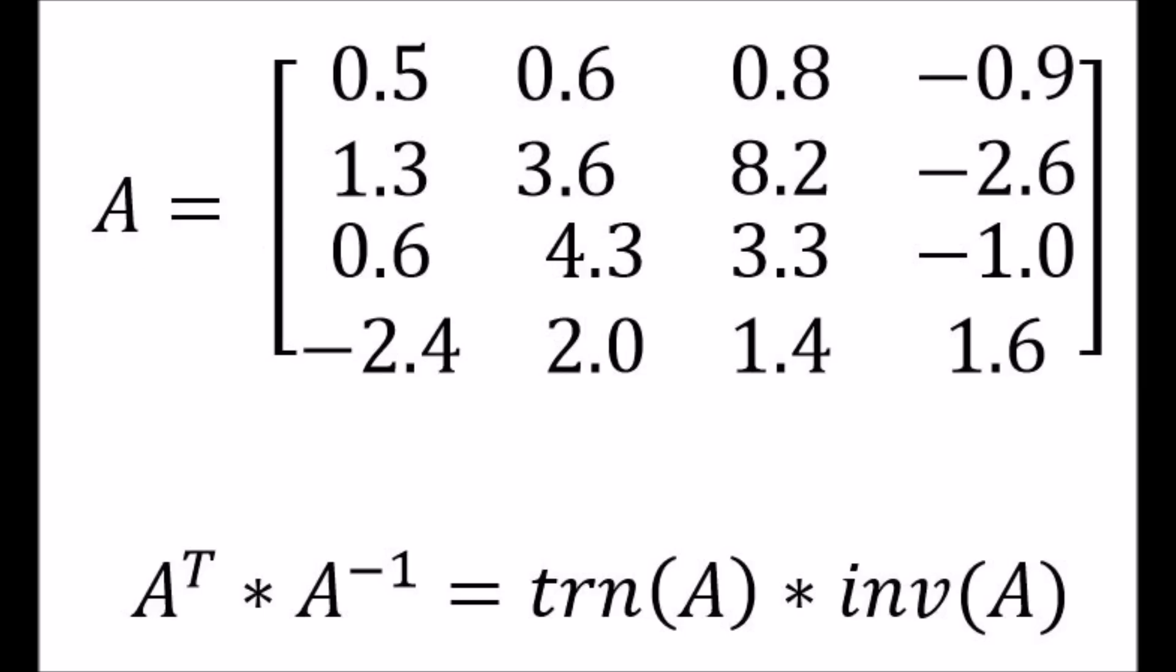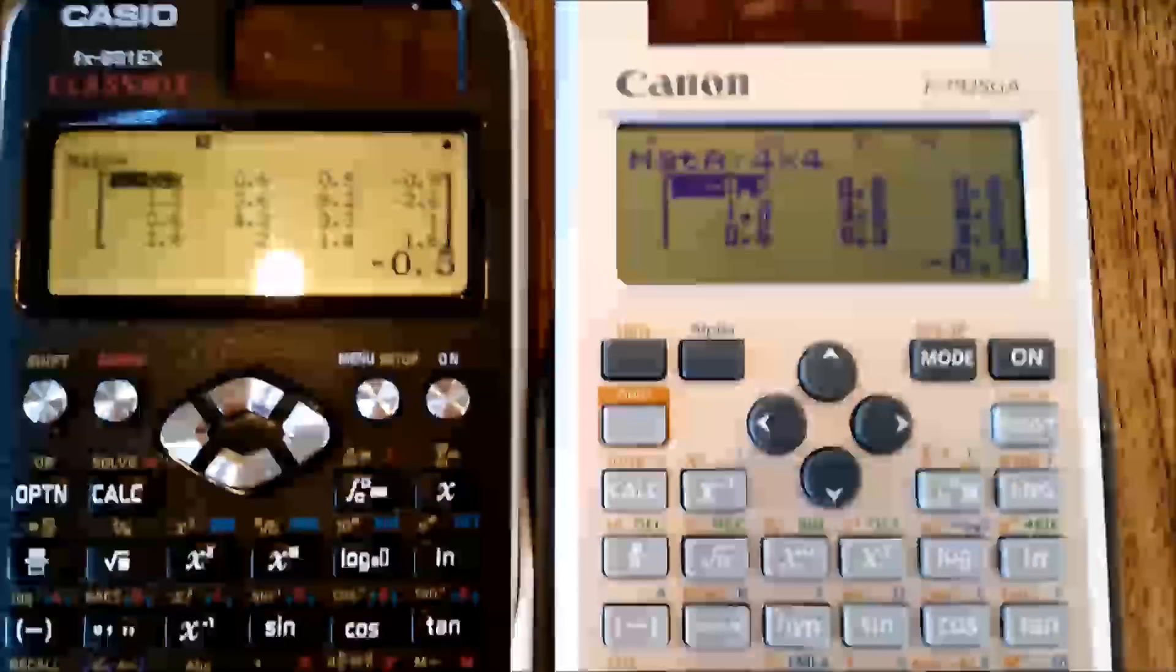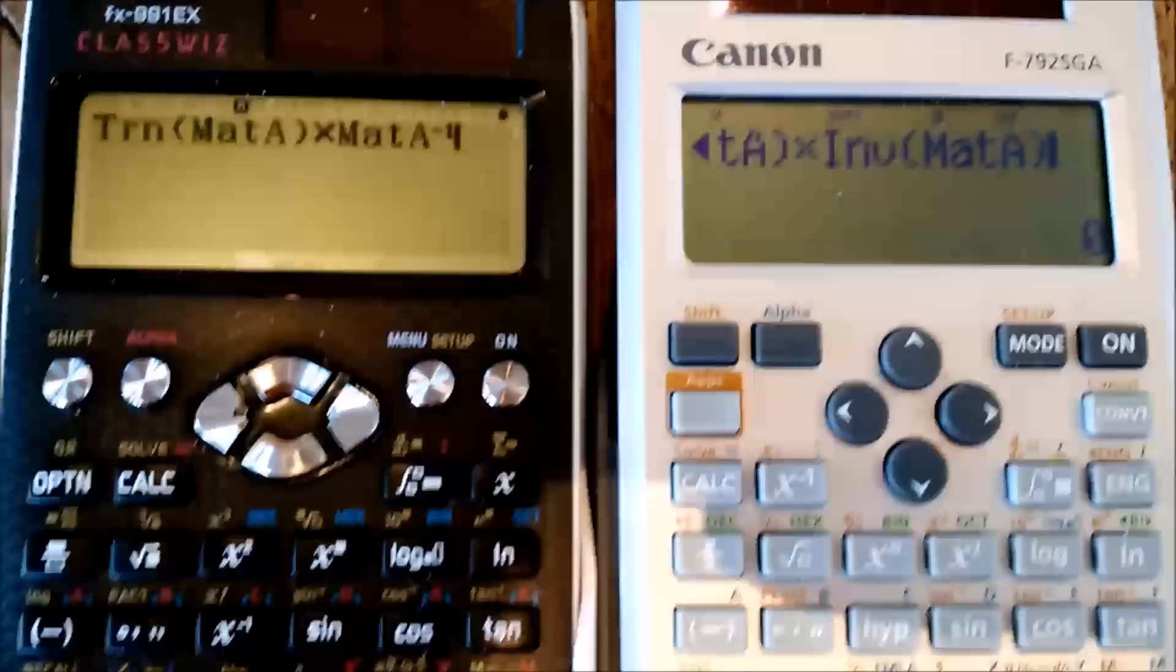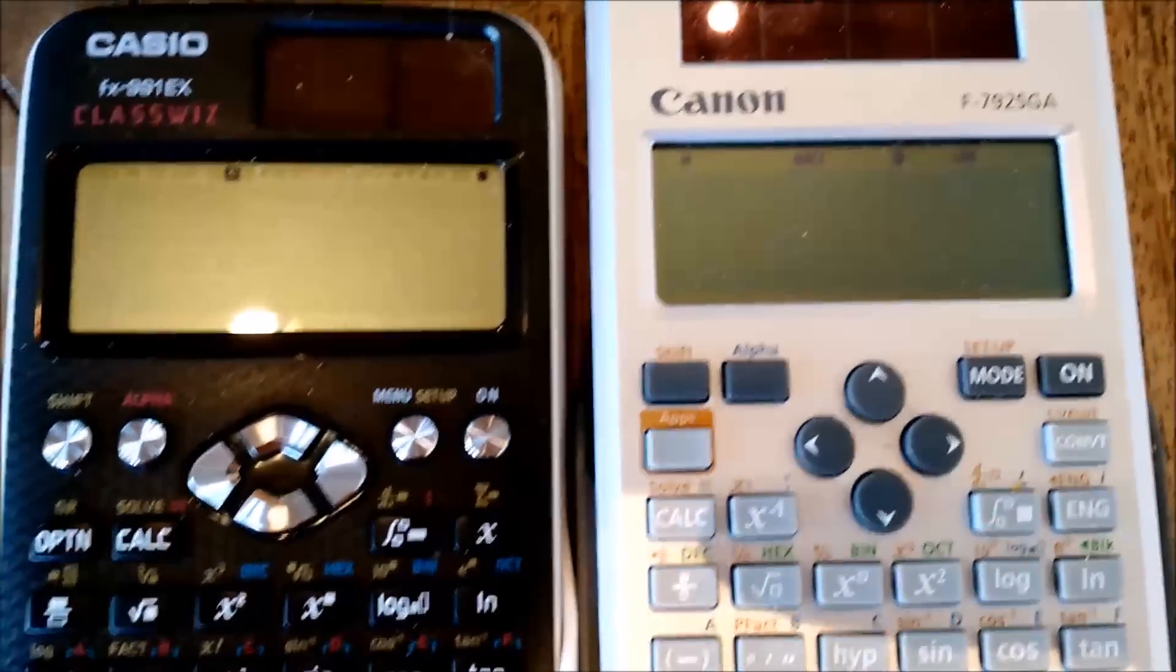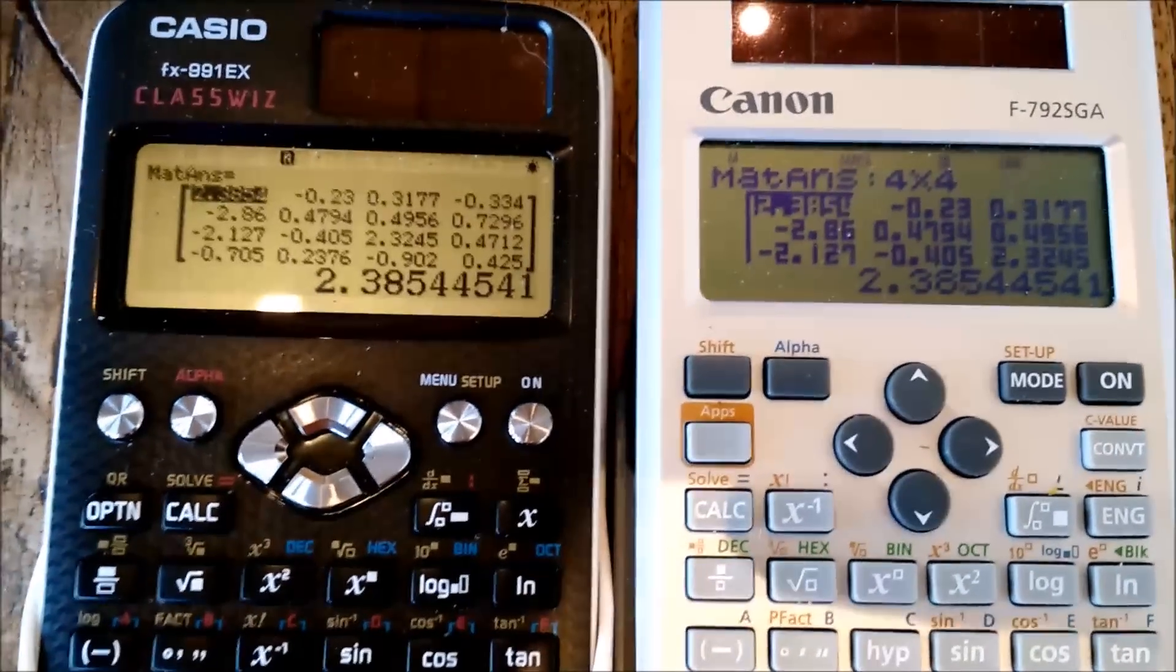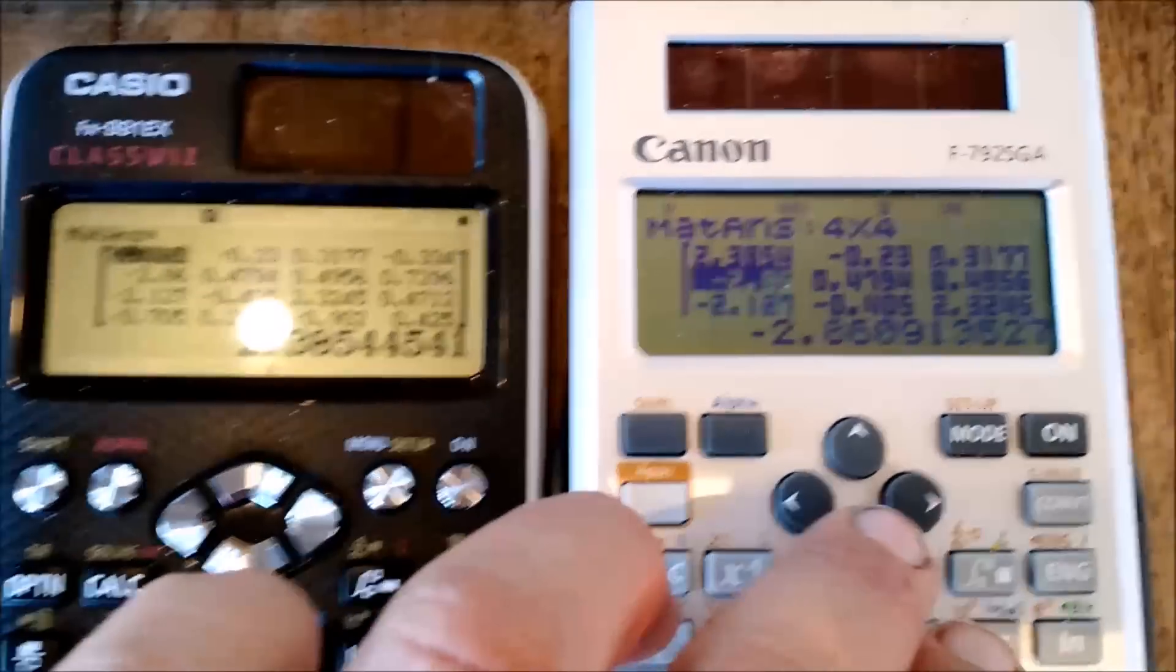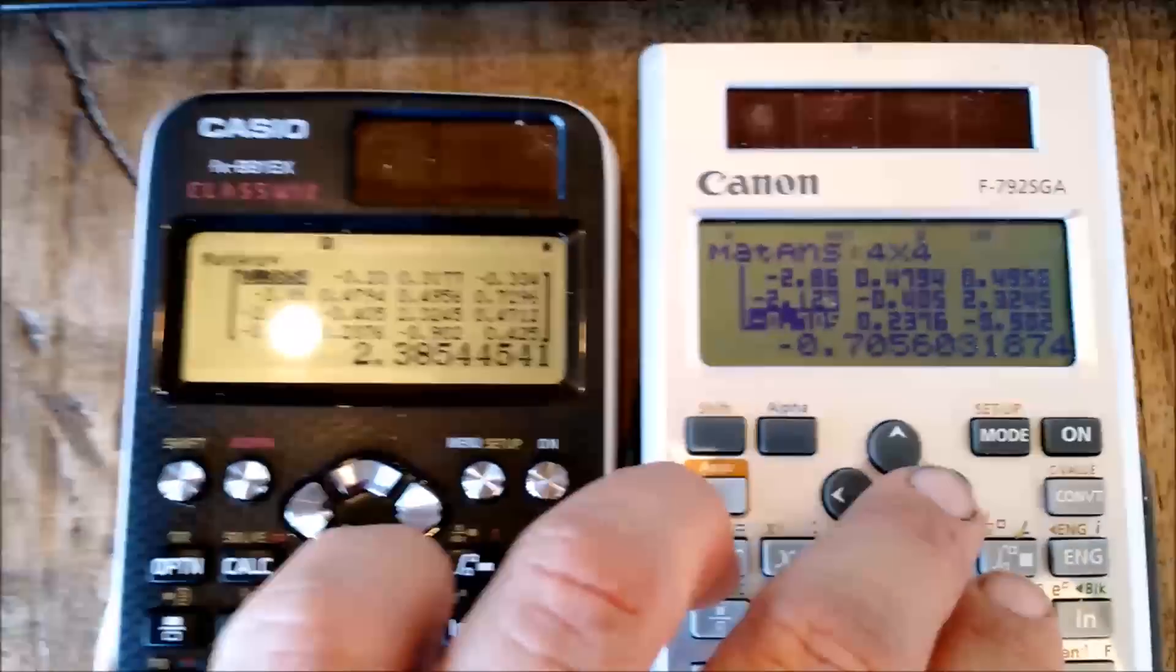Next we're going to do some evaluation with a 4 by 4 matrix. Here we're showing you the matrix, and what we're going to do is take the transpose of A times the inverse of A.